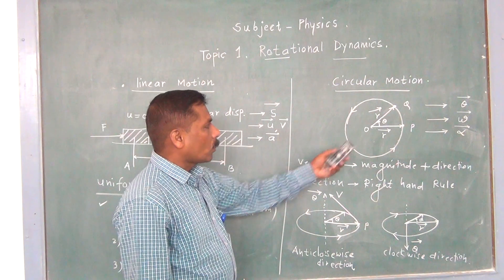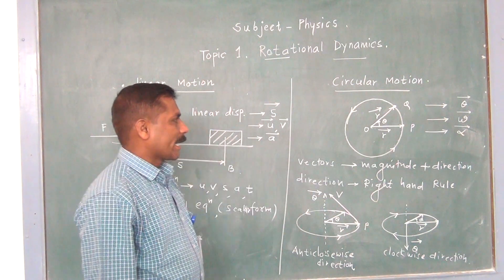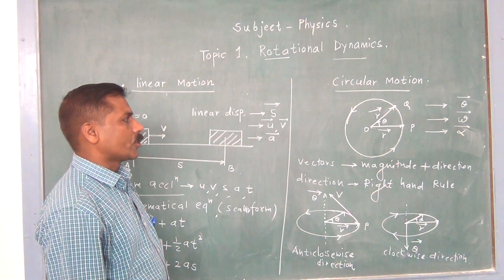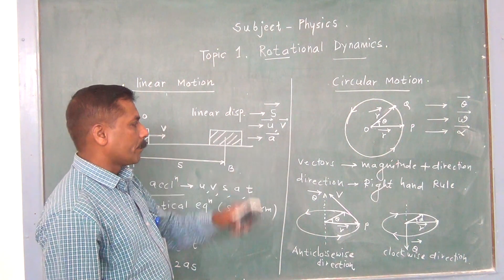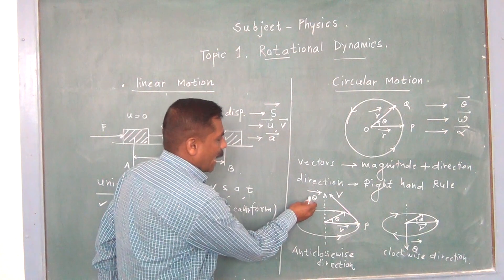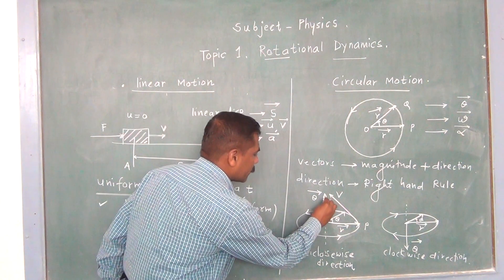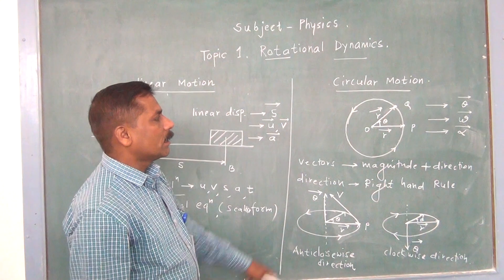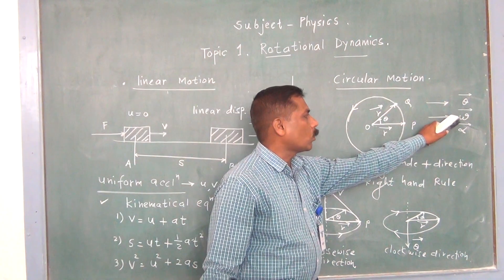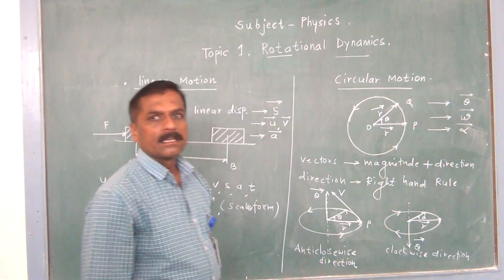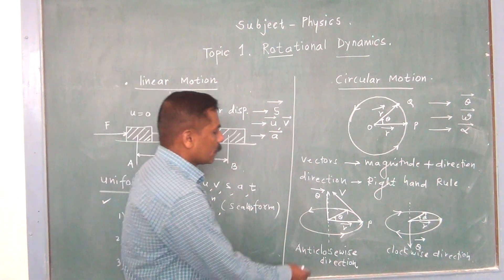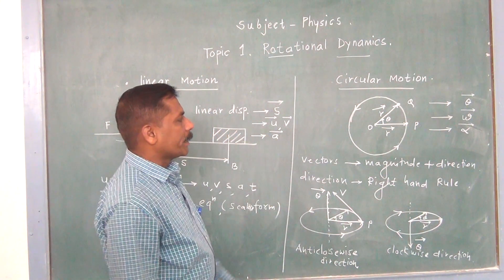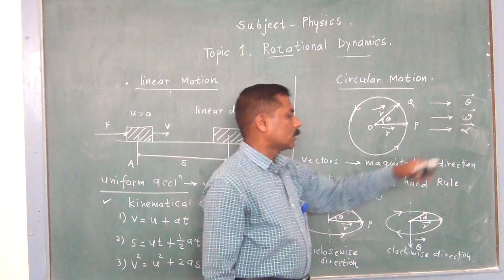You can easily find out that all these are vectors: angular displacement, angular velocity, and angular acceleration. If this angular displacement is along this axis, then the remaining two quantities, omega and alpha, are also along this axis.